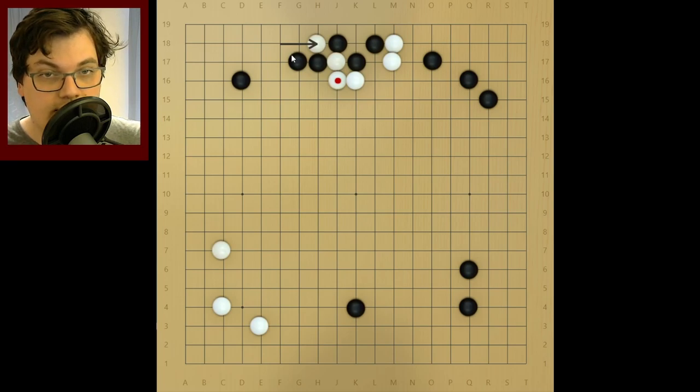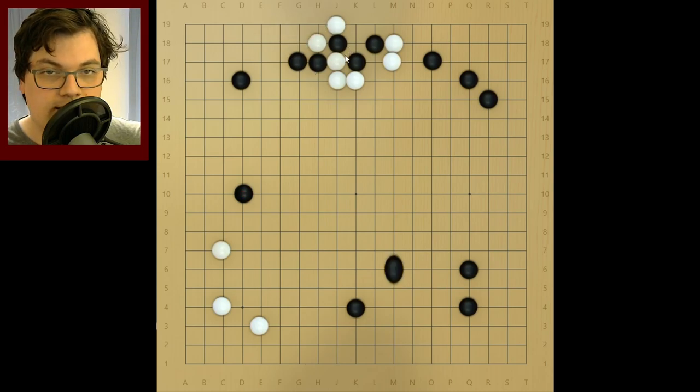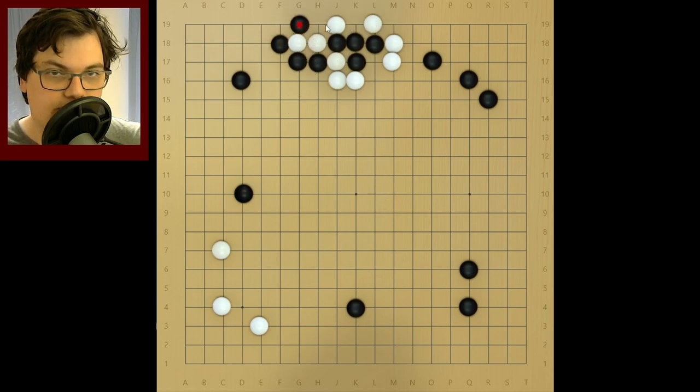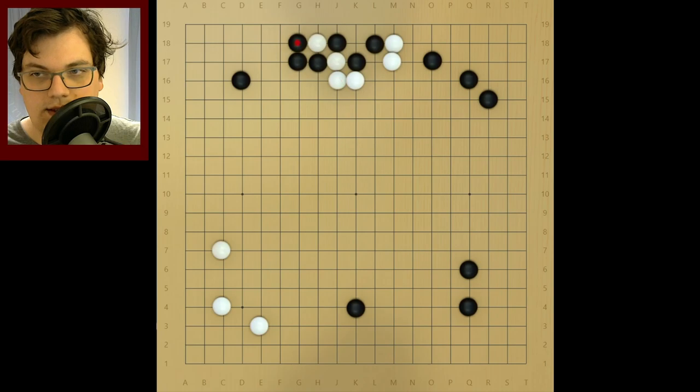Black does not need to play this next move here, because if Black plays away, White just doesn't have the liberties here to do anything. Black just takes these two stones, White connects, and then connects, but this is still the same. White has no base here. But for simplicity's sake, let's just talk about this stone.